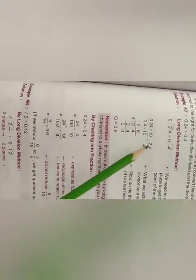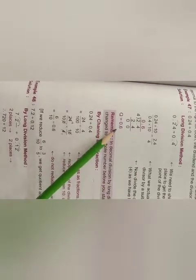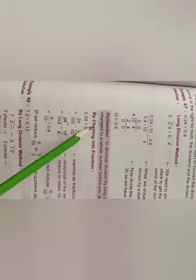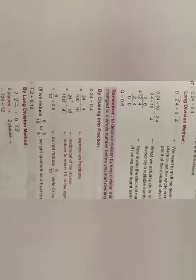Now you see 2.4 divided by 4. The answer is 0.6. Here also it is written. Remember, in decimal division by long division method, the divisor must be changed to a whole number before you start dividing.